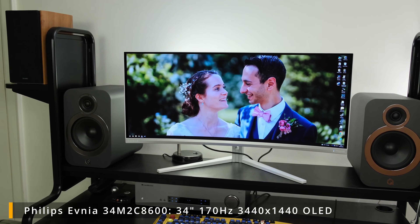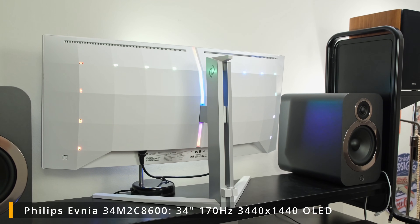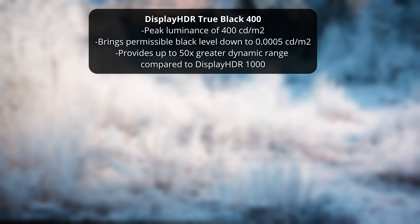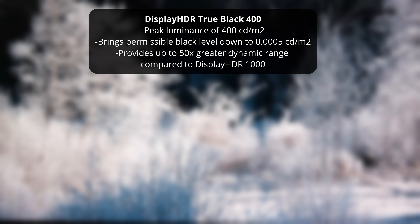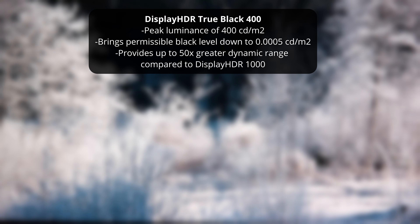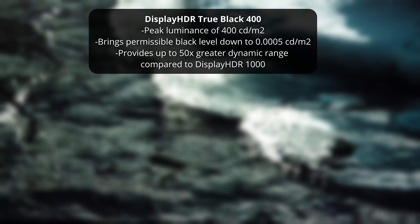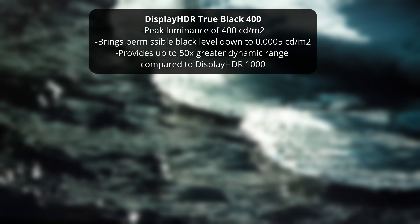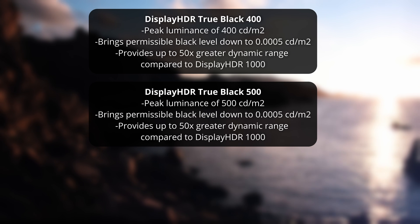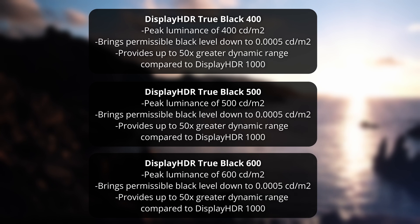Display HDR True Black 400 is present on the Philips Evnia 32M2C8600. It delivers a peak luminance of 400 nits, a black level as low as 0.0005 nits — one of the lowest measurable levels — and 50 times greater dynamic range over a Display HDR 1000 certified monitor. Outside of True Black 400 mode, you'll actually get over 1000 nits. The True Black 500 and 600 standards similarly offer up to 500 and 600 nits respectively.